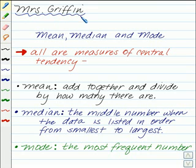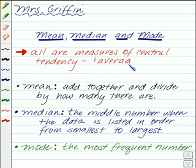Hi, I'm Mrs. Griffin, and in this lesson we are looking at the mean, median, and mode, and how to find them. These are all measures of central tendency, also known as the average. So when you hear someone say the average, they could be talking about any of these three. There's three types.